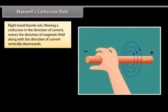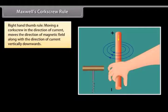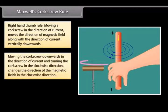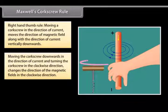Maxwell's Corkscrew Rule. Maxwell's Corkscrew Rule, also known as Right Hand Thumb Rule, defines that moving a corkscrew in the direction of current moves the direction of magnetic field along with the direction of current vertically downwards. If we move the corkscrew downwards in the direction of current and the handle of corkscrew is turned in the clockwise direction, then the direction of the magnetic fields is in the clockwise direction.